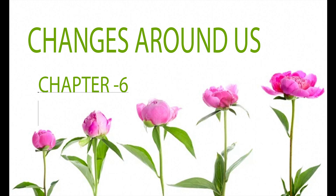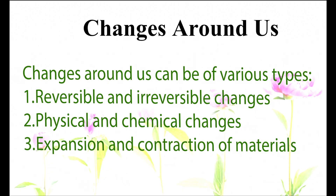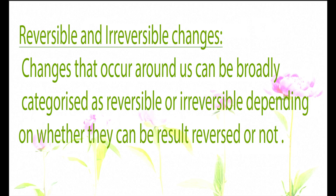The changes around us can be of various types: reversible and irreversible changes, physical and chemical changes, and expansion and contraction of materials. So, what are reversible and irreversible changes? Changes that occur around us can be broadly categorized as reversible and irreversible, depending on whether they can be reversed or not.